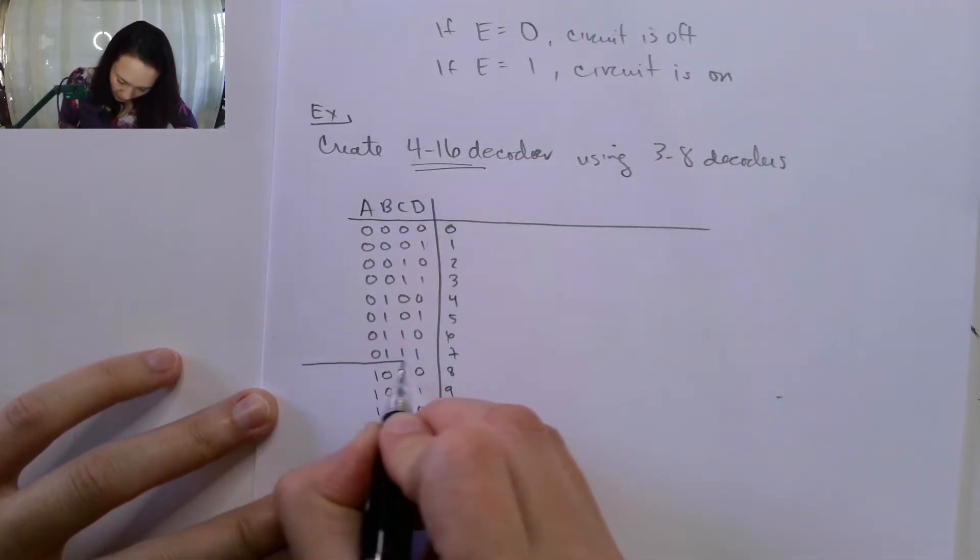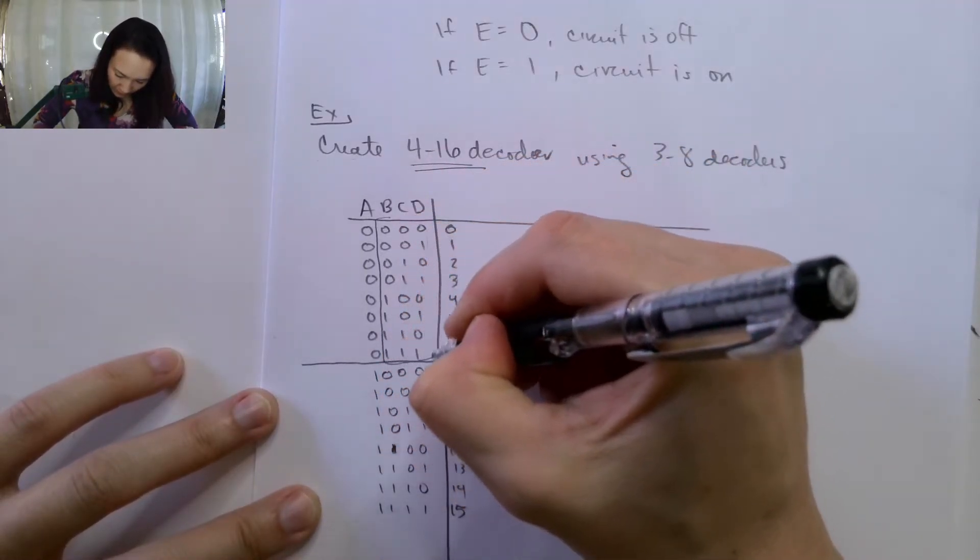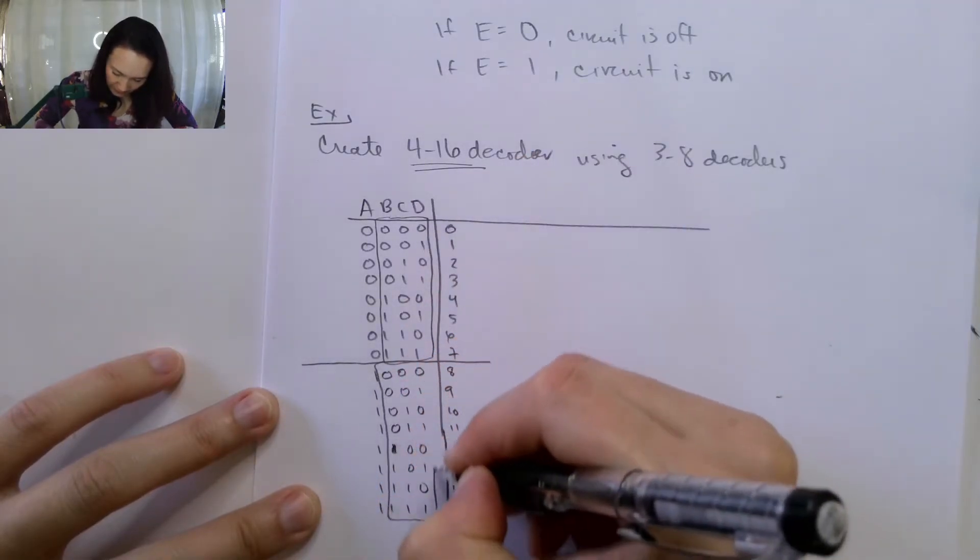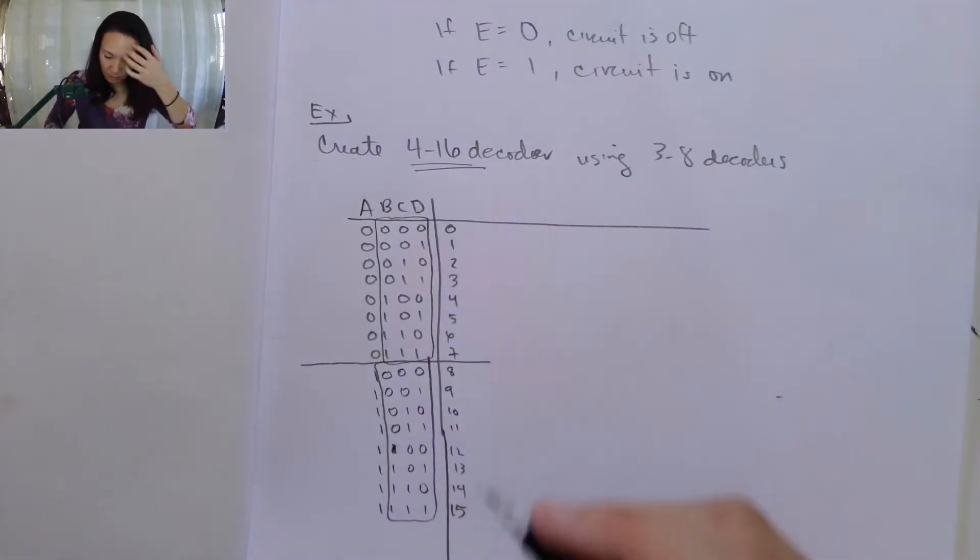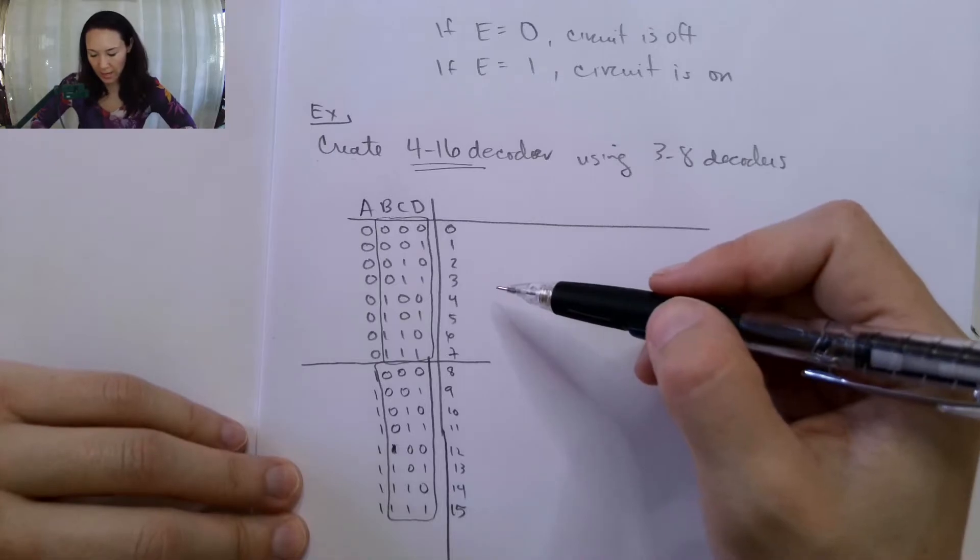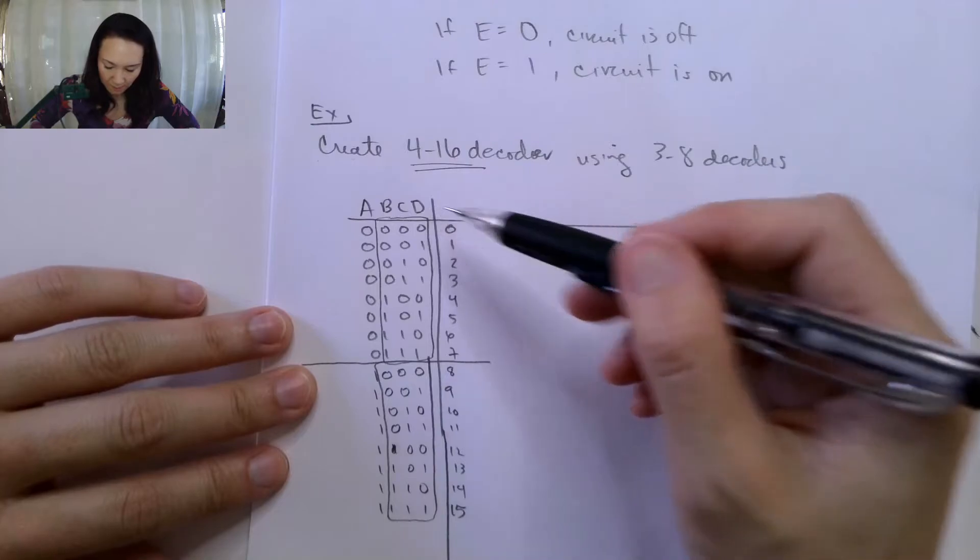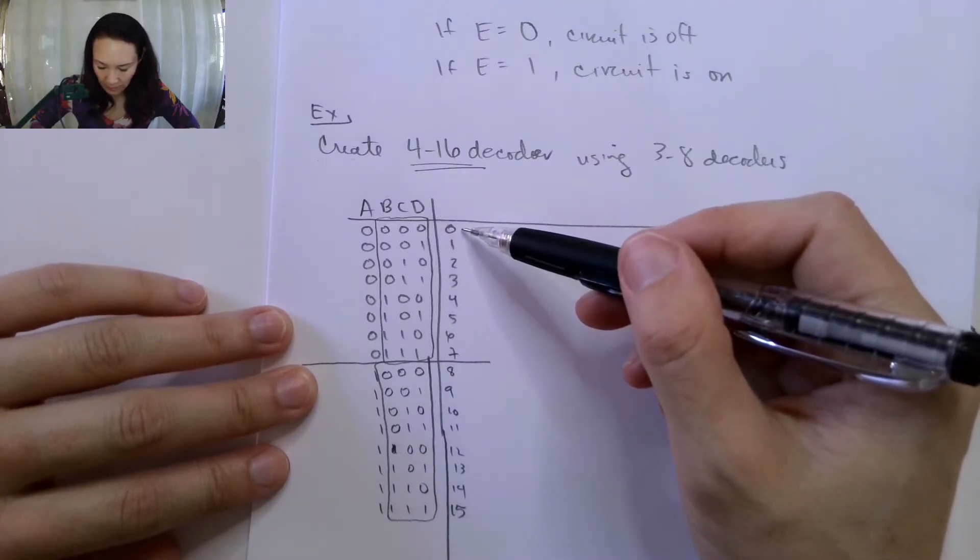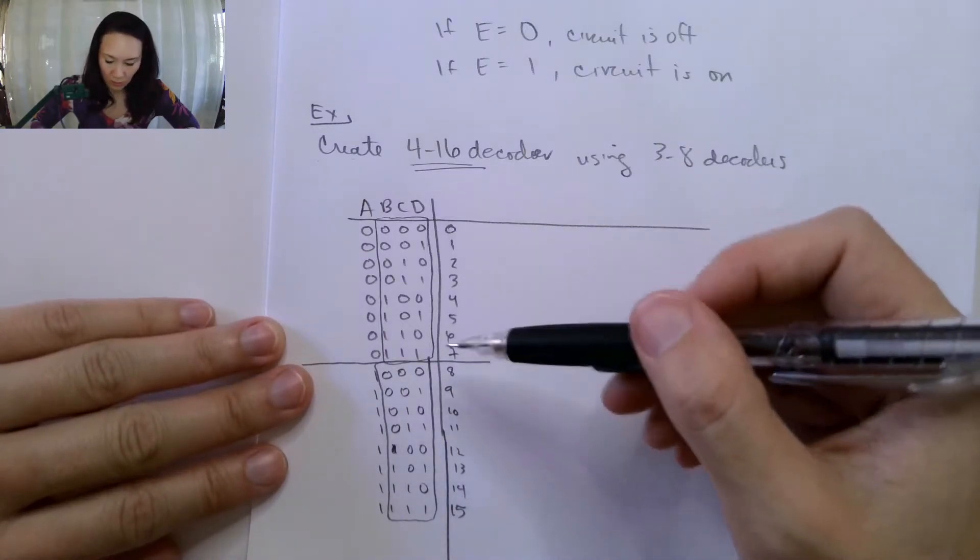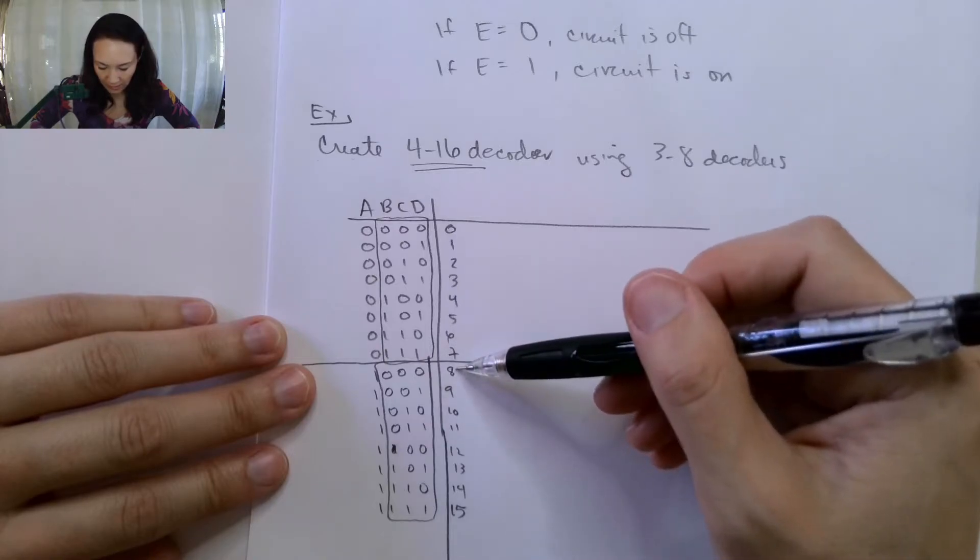If I draw a line right here, you'll see that this block here and this block here are identical. So we can implement this with a 3-to-8-bit decoder. If we had a decoder that took in inputs B, C, D and outputted the decimal output 0 through 7, and then we had a second decoder that took in, again, inputs B, C, D but then outputted 8 through 15, then we can use our A line to basically switch between the two.